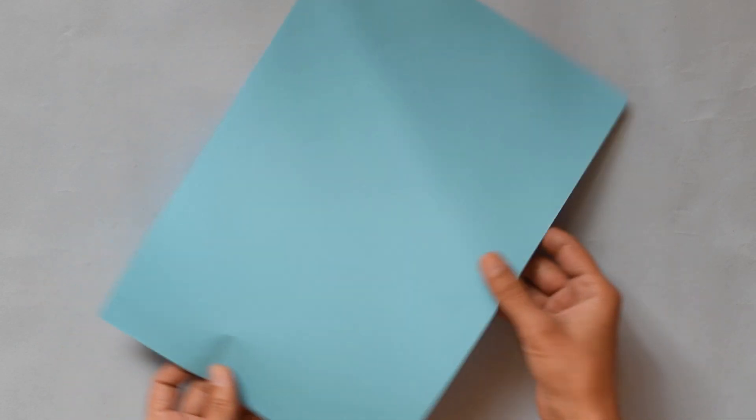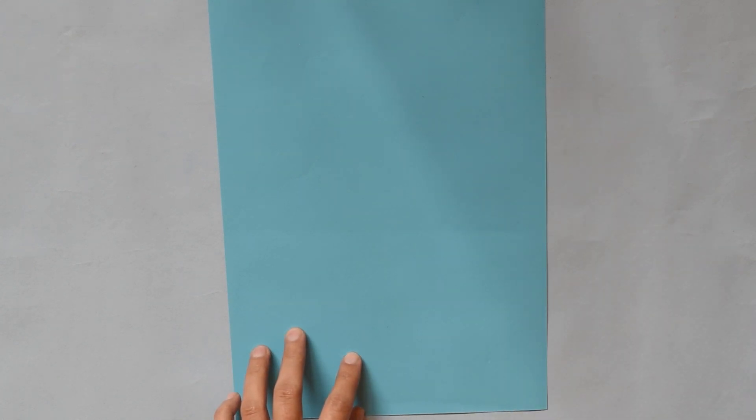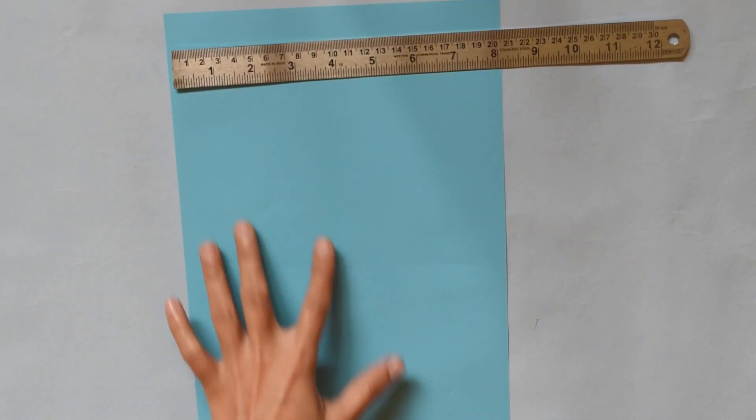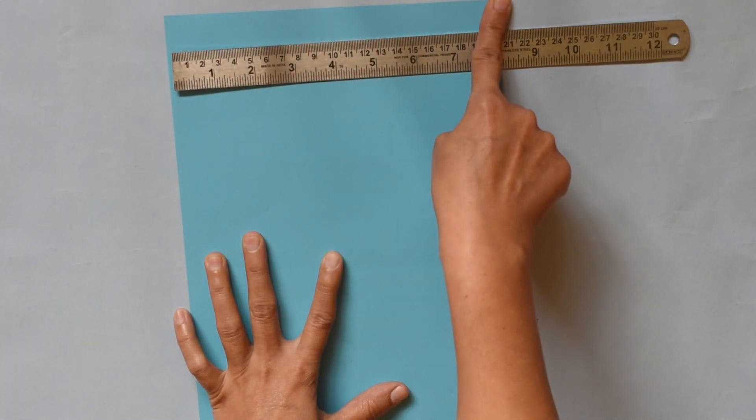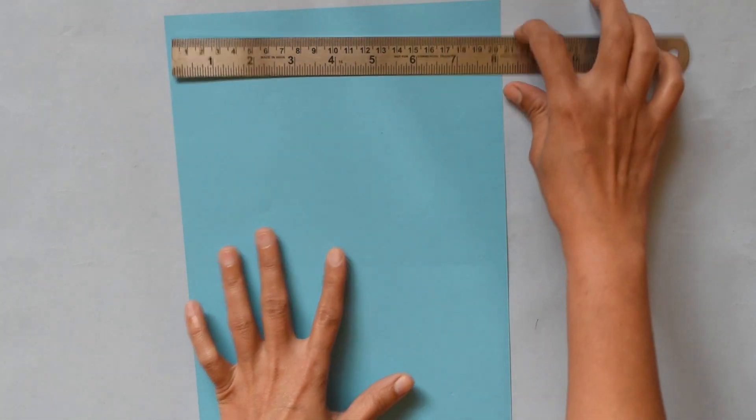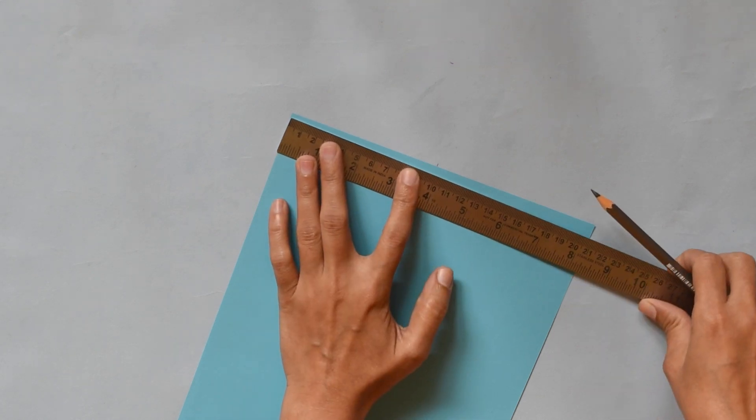Put paper like that and make a mark here. This is the long side and this is the short side. So you have to mark on the short side. You mark at 3 cm.